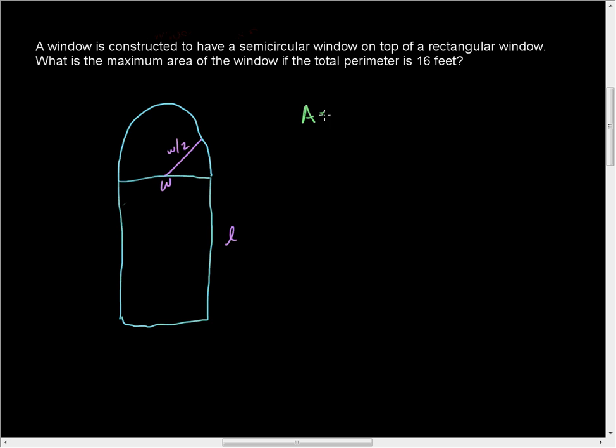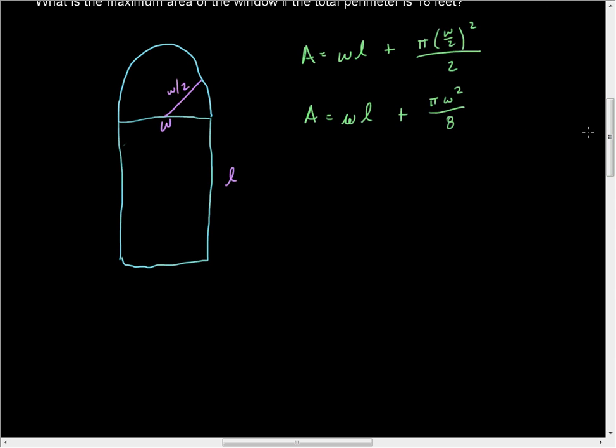I know that I am looking for the area, and the area of this is going to be the area of the rectangle, which is width times length, plus the area of the semicircle, which is going to be half of the area of a normal circle. A normal circle is πR², which is W over 2 squared, but we only need half of it. So if I clean this up a little bit, this is WL plus πW² over 8. And therein lies my problem from last time. That's my second attempt at this. I screwed up about 5 minutes into the video.